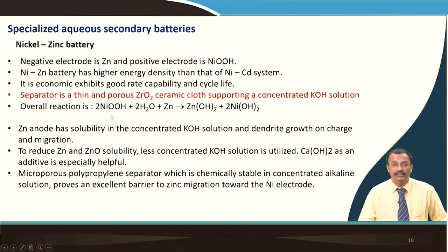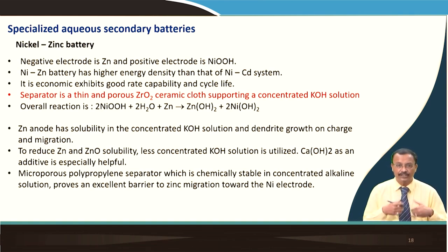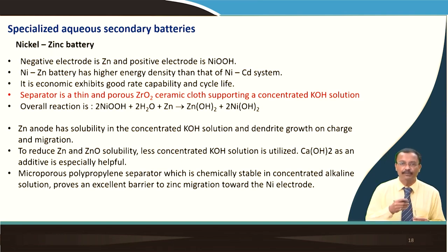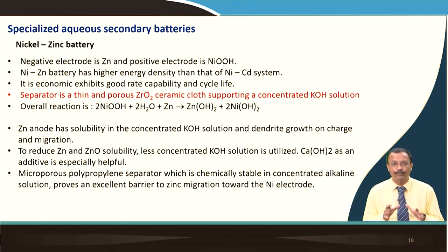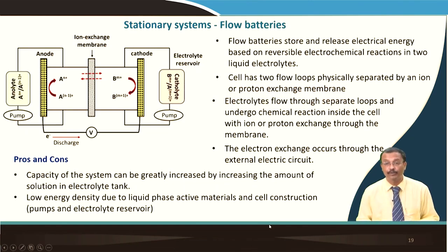The zinc in concentrated KOH has solubility issues and dendrite growth during charge and migration. To reduce the zinc oxide solubility, low-concentration KOH is utilized, sometimes with calcium hydroxide additives. A microporous polypropylene separator, which is chemically stable in concentrated alkaline solutions, proves to be an excellent barrier for zinc migration towards the nickel electrode.